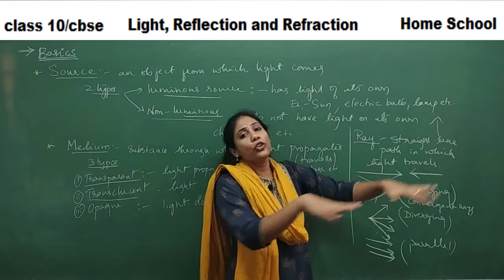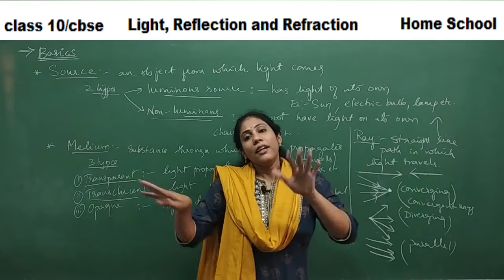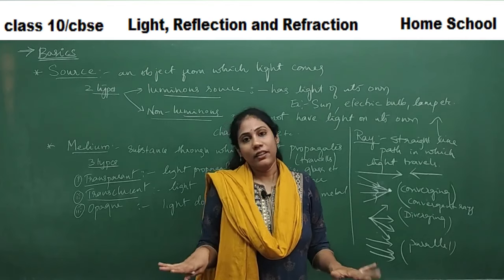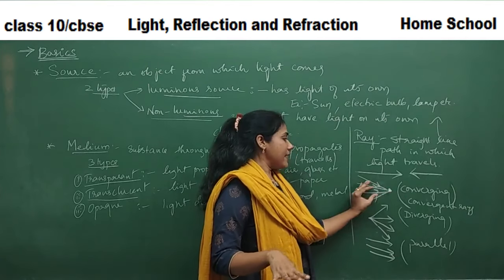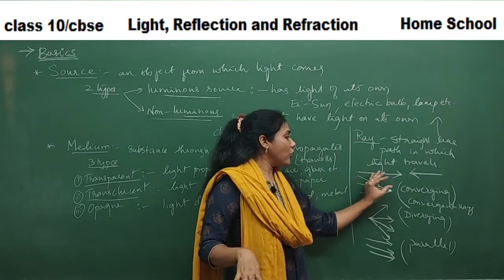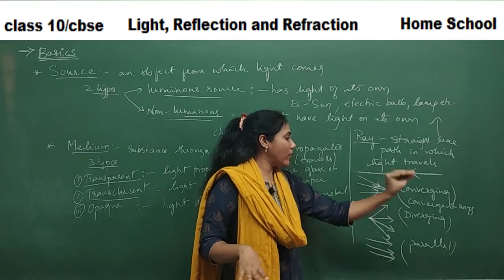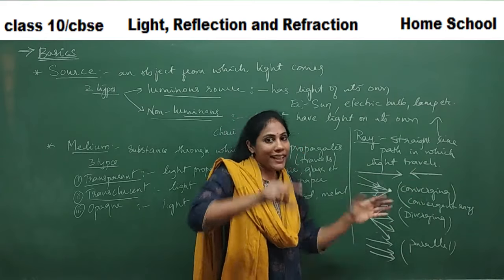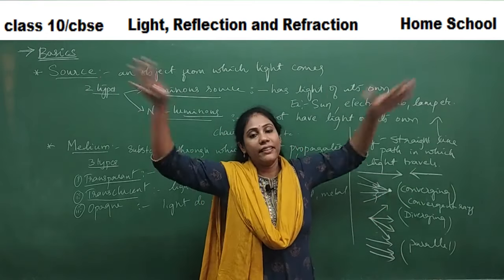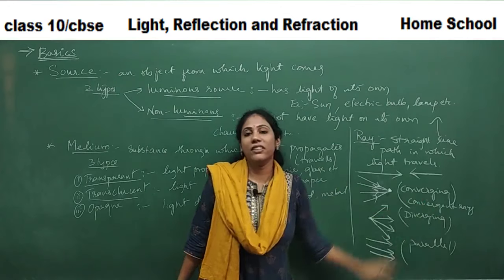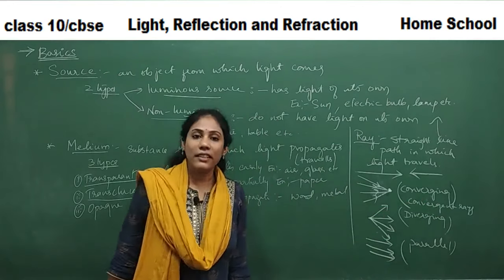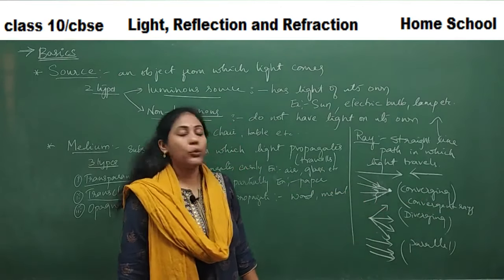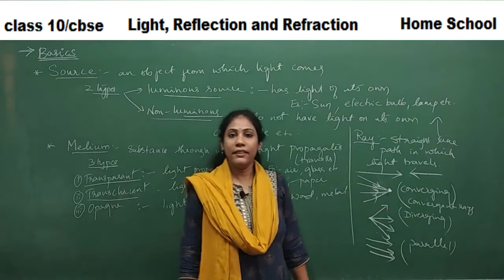These meanings are very important to understand, as you will come across these words throughout the chapter. Parallel means going straight and parallel — not meeting anywhere. Convergent means all rays are meeting at one point. Divergent means from a point, the rays are going away. These terms are very, very important to understand.